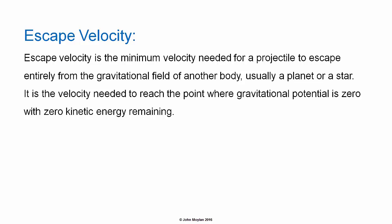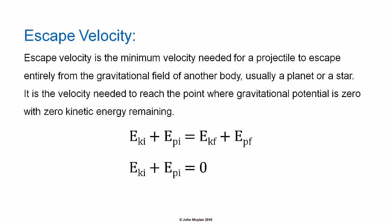Escape velocity is the minimum velocity needed for a projectile to escape entirely from the gravitational field of another body, which is usually a planet or a star. It is the velocity needed to reach the point where gravitational potential energy is zero, with zero kinetic energy remaining. As a projectile is a closed system, the sum of the initial kinetic and potential energy, E subscript KI plus E subscript PI, equals the sum of the final kinetic and potential energy, E subscript KF plus E subscript PF.